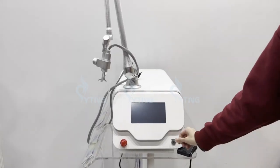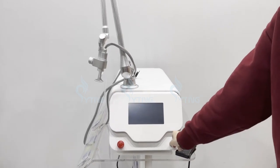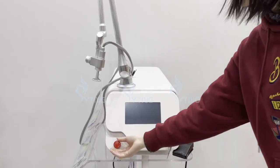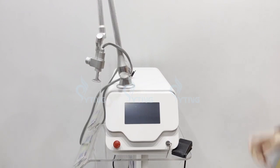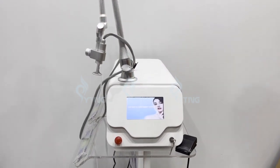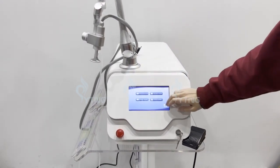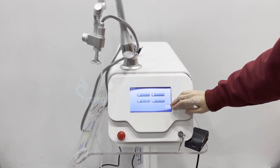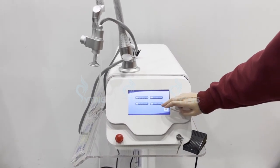Now we insert this key to turn on the machine. Rotate this button. There are four functions. Now we choose this bubble mode.